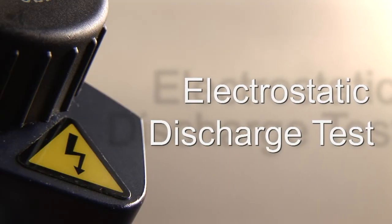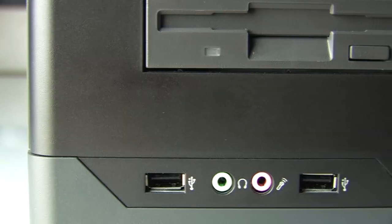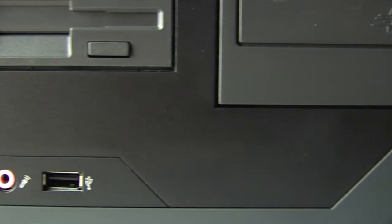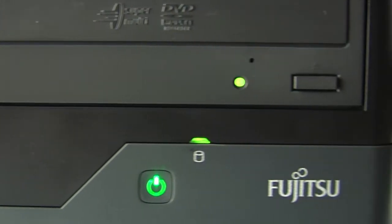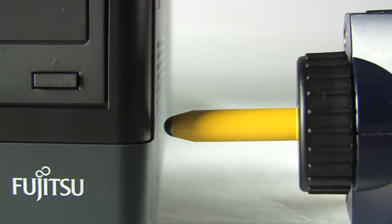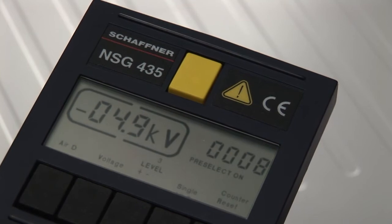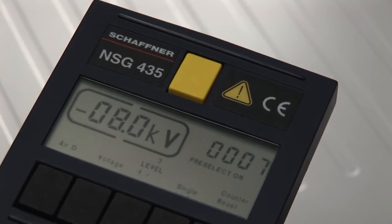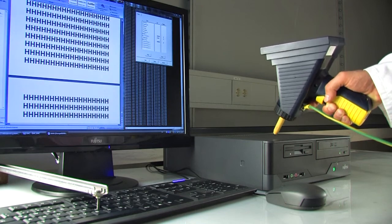Electrostatic discharge. An electronic product shall withstand electromagnetic interference and disturbance to keep its function. To test this, we apply an electrostatic discharge with different high voltages to the products.